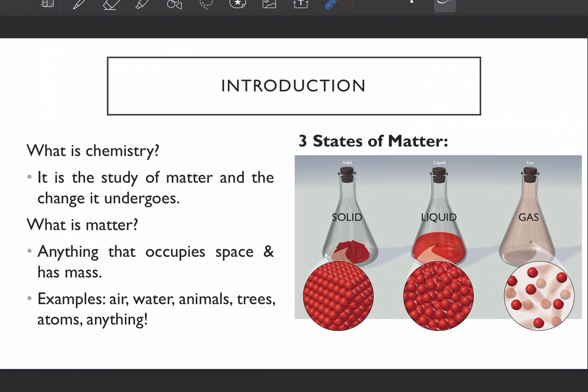Examples of matter include air, water, animals, trees, atoms, phone, anything. So there are three states of matter. Your matter can exist in three states: solid, liquid and gas.